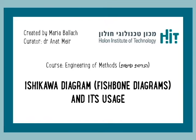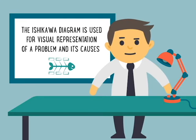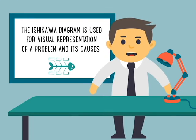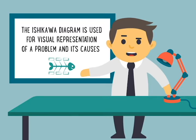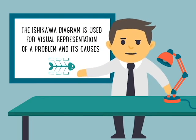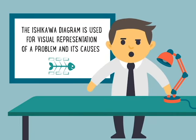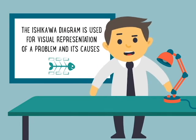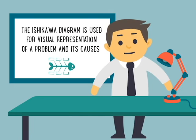The Ishikawa Diagram is used during problem solving as a vivid illustration of an existing problem and the factors influencing its appearance. Visualization aids with analysis and helps to find factors that need to be changed to solve the problem.